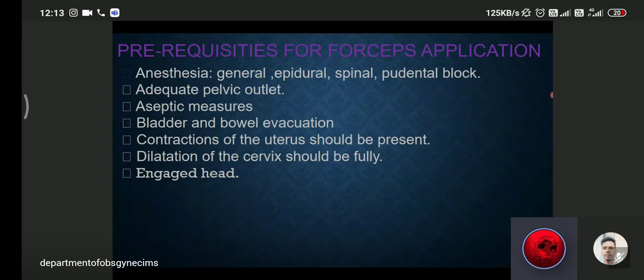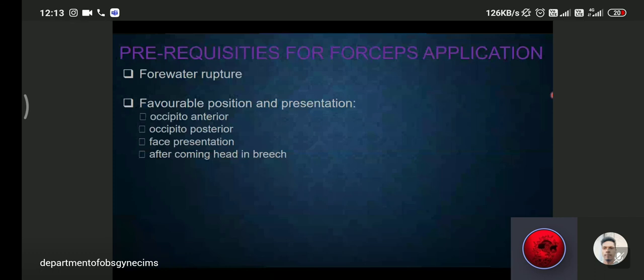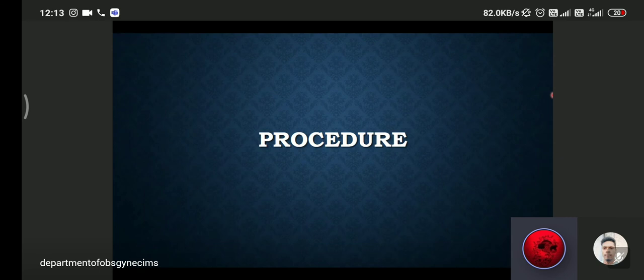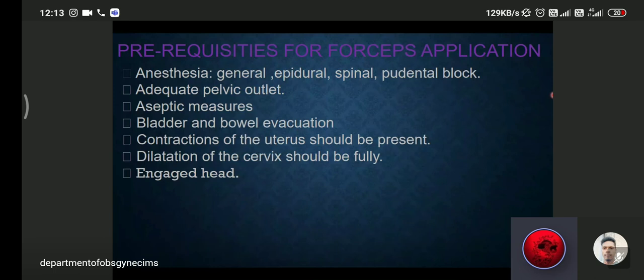Then membrane should be ruptured. The favorable positions are occipital anterior, occipital posterior, face presentation, and after coming head in breech. Now we come to the procedure. As I told you, lithotomy position with anesthesia, with adequate pelvic outlet, and with all aseptic precautions. Bladder and bowel should be empty and the contraction of uterus must be there.